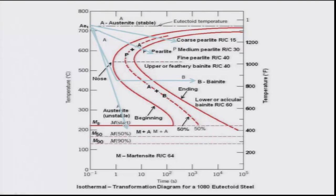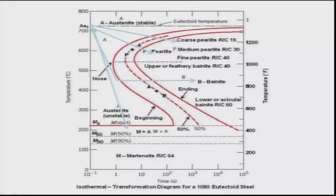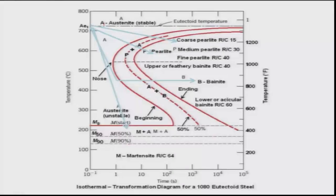Now let us discuss the TTT curve in detail. As you see, this is temperature versus time. The A1 temperature is plotted here — it is the eutectoid transformation temperature. MS start, M50 meaning 50% martensite, and M90 meaning 90% martensite are also marked. Sometimes MF finish is shown, but martensite transformation normally never fully completes because of internal strain — retained austenite will always be present. The temperature scale here is in Fahrenheit. There are three transformation curves: one for the beginning, one for the end, and one for 50%.